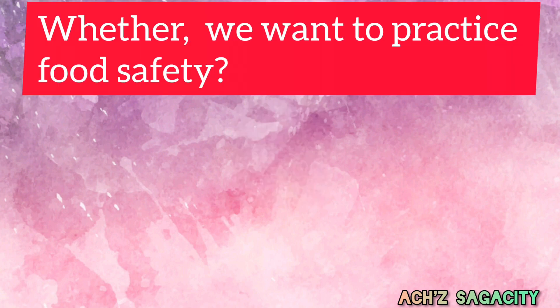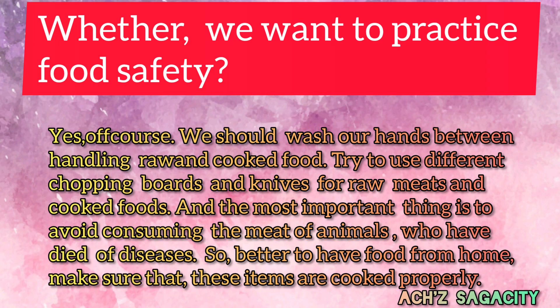The fifth question: Should we practice food safety, and is it important? Yes, of course. We should wash our hands between handling raw and cooked food. Try to use different chopping boards and knives for raw meats and cooked food. The most important thing is to avoid consuming the meat of animals who have died of diseases. It's better to have food from home and make sure that items are cooked properly.